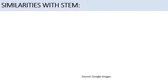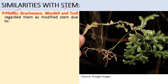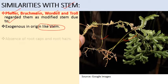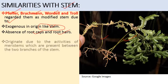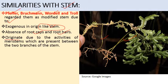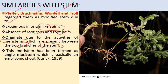Other scientists — Pfeffer, Bruchmann, Wardell, and Troll — regarded the rhizophore as a modified stem, because: it is exogenous in origin like a stem; root caps and root hairs are absent (with some exceptions); and it originates due to activities of the angle meristem — the meristem present between the two branches at the point of dichotomy — which is basically an embryonic shoot.